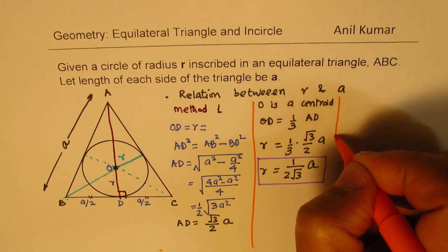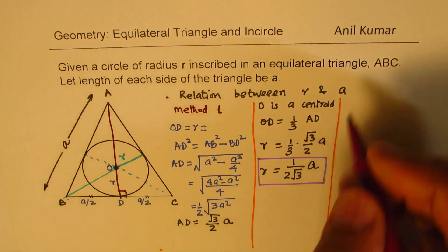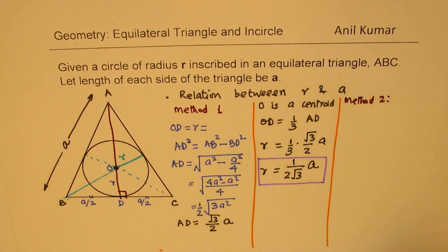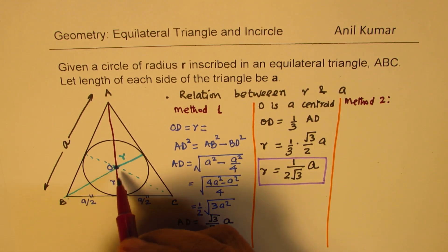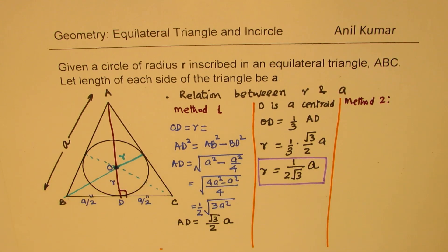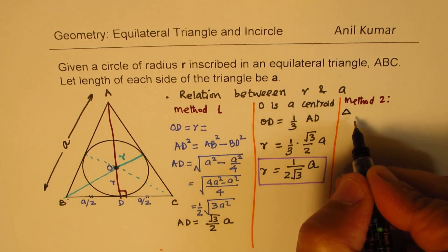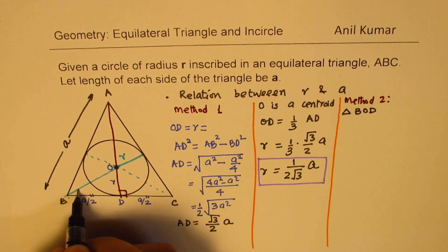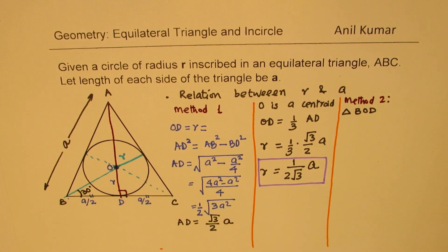Now, let's use the second method to find the relation between r and a. This time in second method, we'll use trigonometry. When we connect this, let's look into the triangle BOD. So we'll use trigonometry. We'll say triangle BOD. So here, this is right angle. And what is that angle? This angle is half of 60 degrees. So this is 30 degrees.